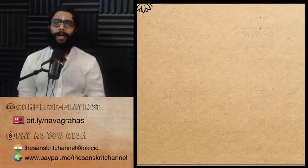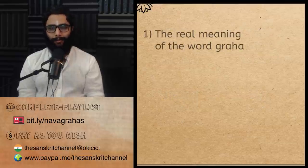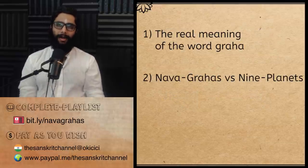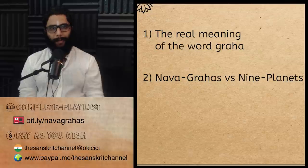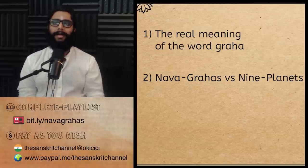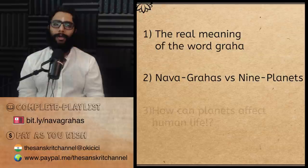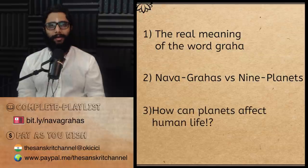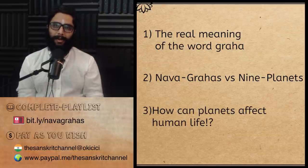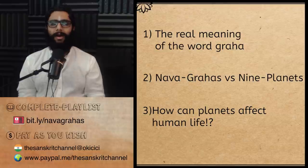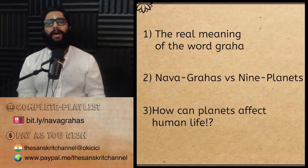In this video, we will look at the real meaning of the word graha, why translating navagrahas as the nine planets is completely misguided, and at the end, answer the most common question — which is in fact not really a question, but a thinly veiled mockery — which is: how can celestial orbs far far away affect our life here on earth?